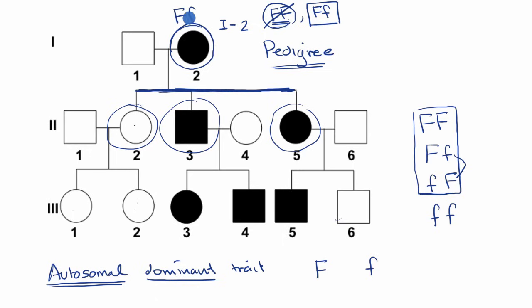So this individual right over here must be heterozygous for freckles. So they must be capital F, lowercase f. And what do we know about this individual right over here, the person that she coupled up with? Well, they don't exhibit the phenotype for freckles. So they must be lowercase f, lowercase f. And then from that, you might be able to intuit a lot more about that. And we'll do that in future worked examples.